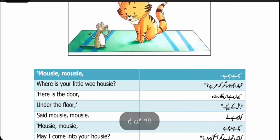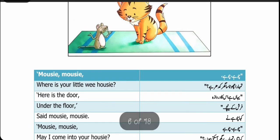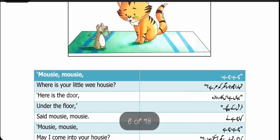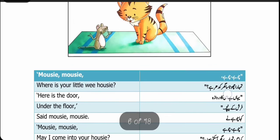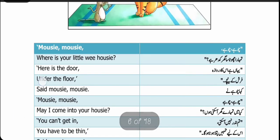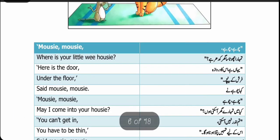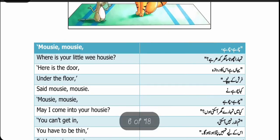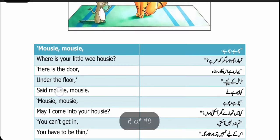Here is the door. Here — یہاں — is — ہے — the door — دروازہ۔ یہاں ہے اس کا دروازہ۔ Under the floor — Under — نیچے — the floor — فرش کے — فرش کے نیچے۔